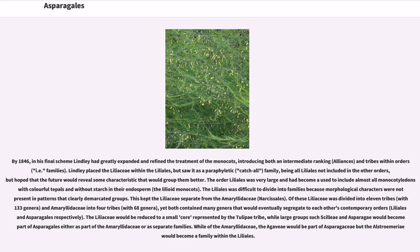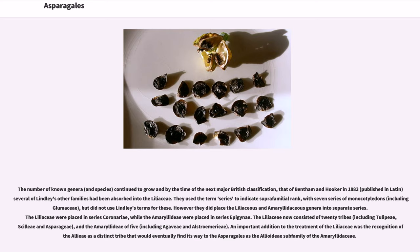While in the Amaryllidaceae the Agavii would be part of Asparagaceae, the Alstroemerieae would become a family within the Liliales. By the time of Bentham and Hooker's classification in 1883, several of Lindley's other families had been absorbed into the Liliaceae. They used the term series to indicate superfamilial rank, with seven series of monocotyledons. The liliaceous and amaryllidaceous genera were placed into separate series — Coronariae and Epigynae respectively. The Liliaceae now consisted of 20 tribes, including Tulipae, Scilleae, and Asparagi, and the Amaryllidaceae of 5 tribes, including Agavii and Alstroemerieae. An important addition was the recognition of Allii as a distinct tribe.